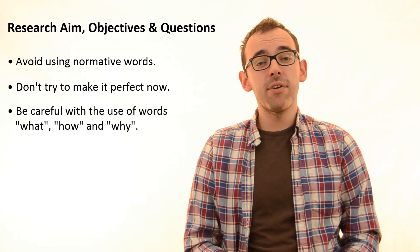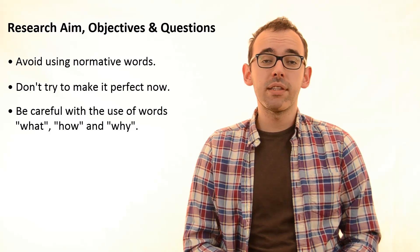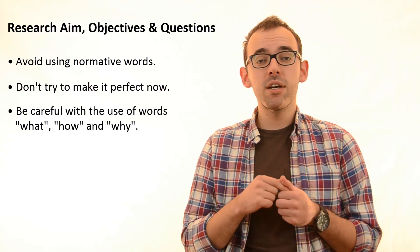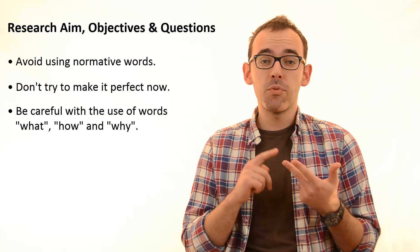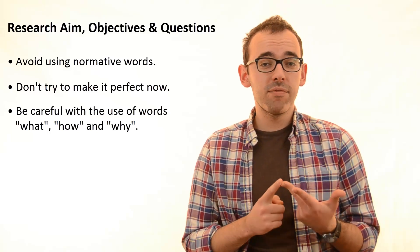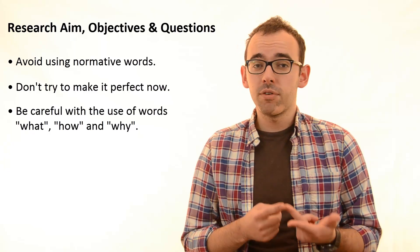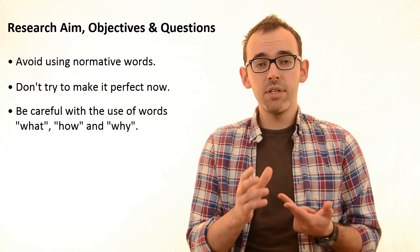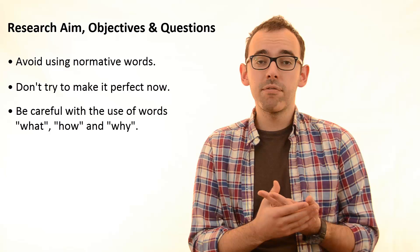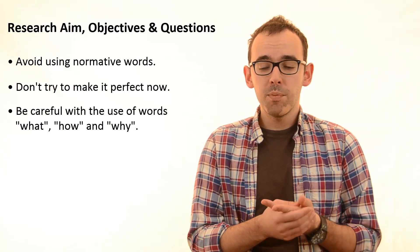Thirdly, there are three very important points when it comes to writing a research aim, and those are what, how, and why. We have discussed these three words in a video where we talked about the nature of the research. So when you are writing a research aim, you have to be very careful with the use of these three.